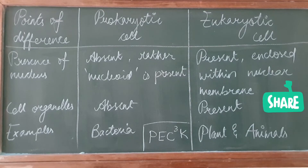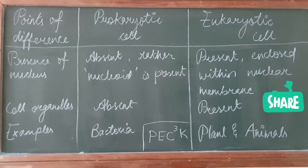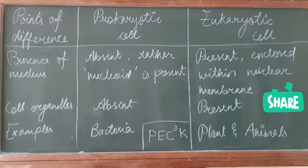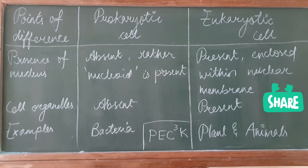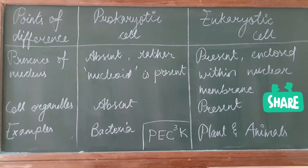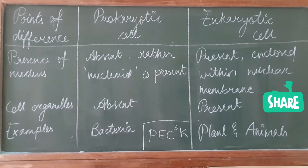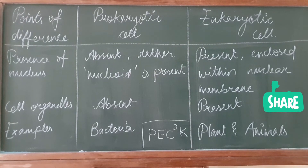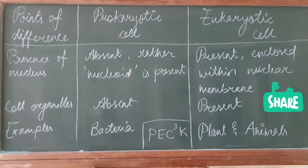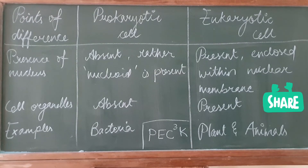The next point of difference is presence of nucleus. In prokaryotic cell, a well-defined nucleus is absent; rather, a nucleoid is present, which is an open region containing DNA. In eukaryotic cell, a well-defined nucleus is present, enclosed within a nuclear membrane.